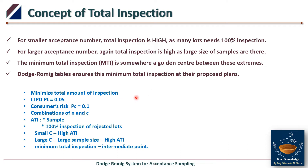LTPD — Lot Tolerance Percent Defective — is the quality level beyond which the customer is not ready to accept the lot. With a consumer risk of 10%, we get a combination of sample size n and acceptance number c, forming the sampling plan. The minimum total inspection lies at some intermediate point: for smaller acceptance numbers, inspection is high; for larger acceptance numbers, inspection is also high; but somewhere in the middle we find the point of minimum total inspection.